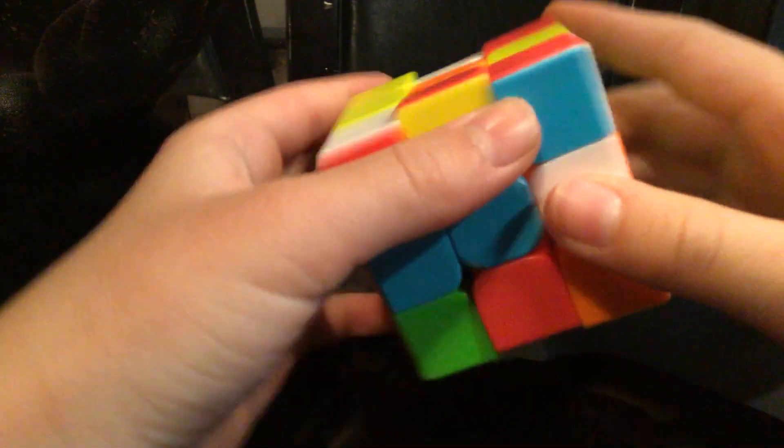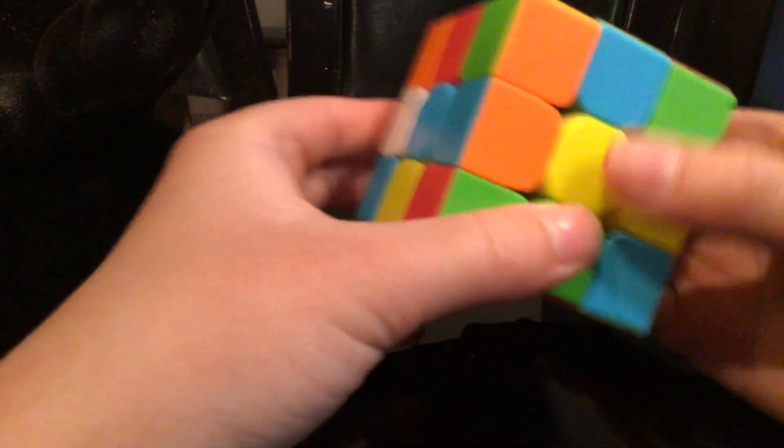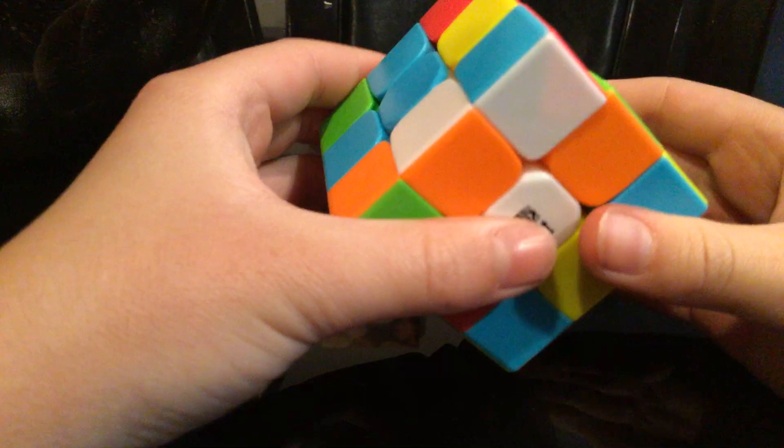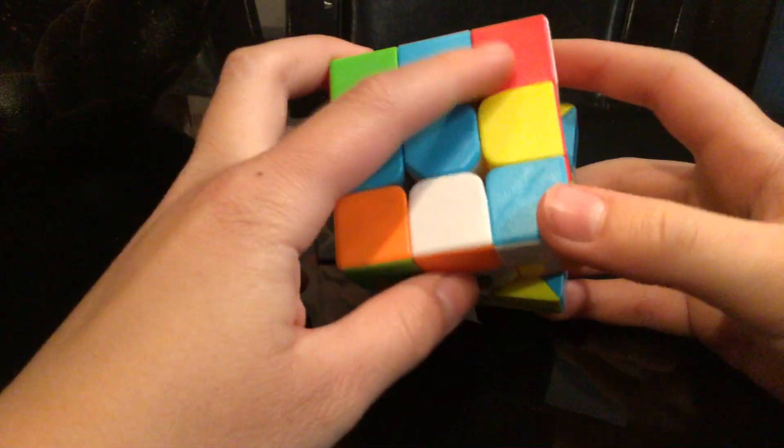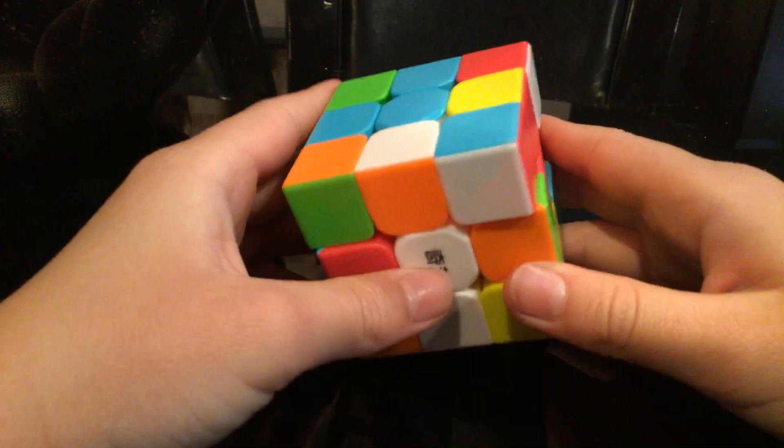Let's solve the blue side of the Rubik's Cube. Let's try to get as many blue things on the square as possible. All these are taken up, so we have to do a certain algorithm.